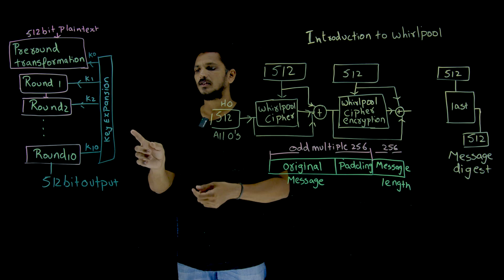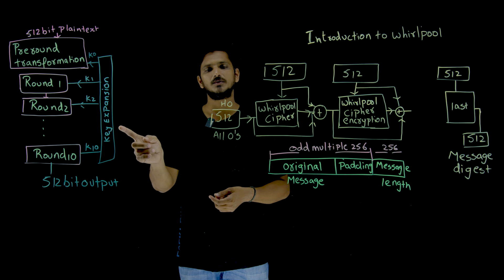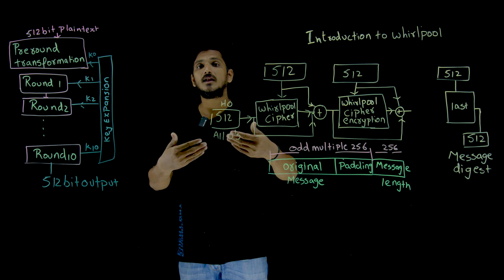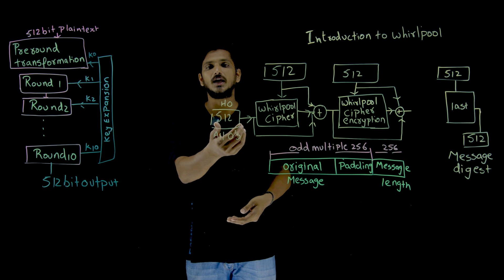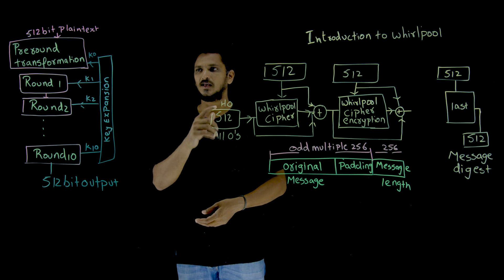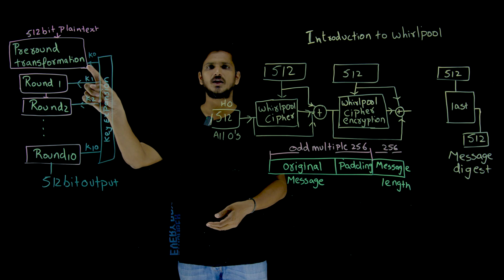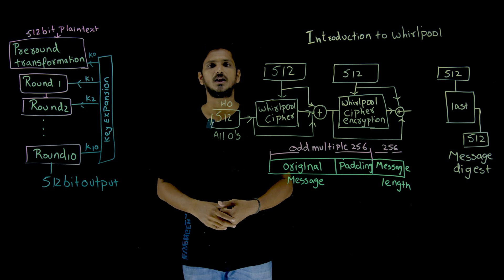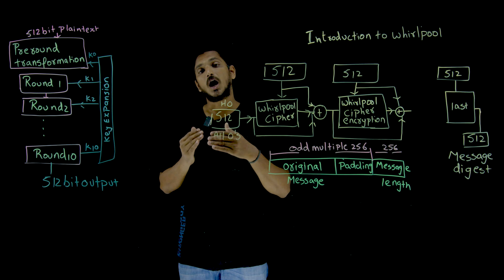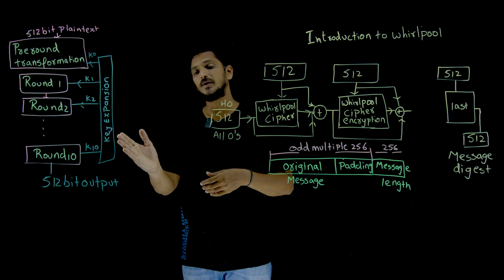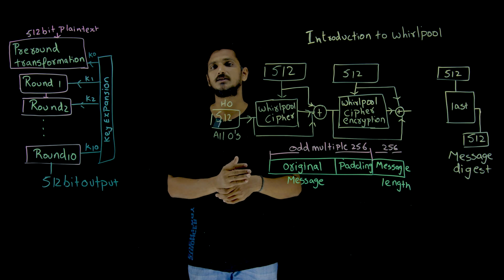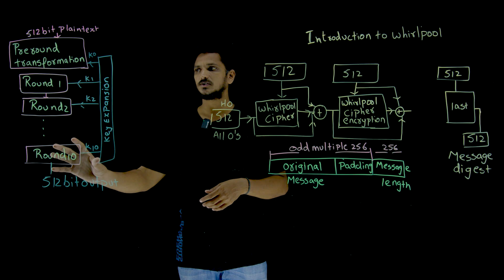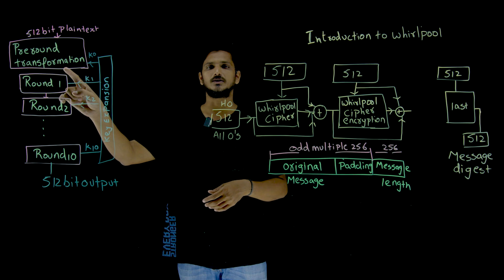The 512-bit key is processed by the key expansion algorithm, which generates the next 10 keys from the initial key. The first key is taken as K0, and the remaining keys are generated by the key expansion algorithm — how that works will be discussed in our next classes. In total, there are 10 rounds plus 1 pre-round transformation.